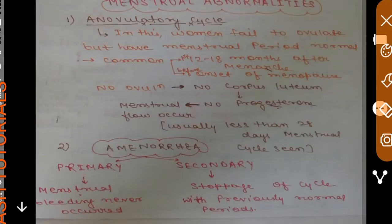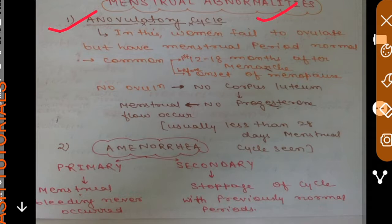In our previous video we discussed about menstruation. In this video we are going to discuss about menstrual abnormalities. The first one is the anovulatory cycle — in this condition, no ovulation will occur. Women fail to ovulate, but the menstrual flow will be normal.